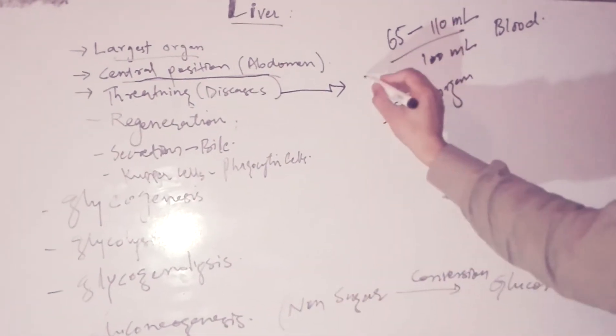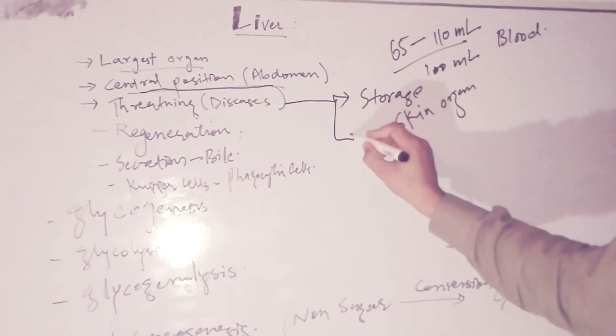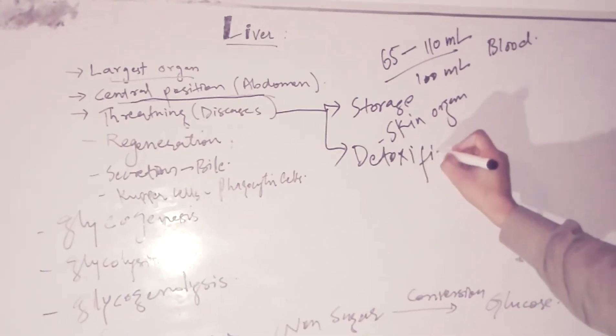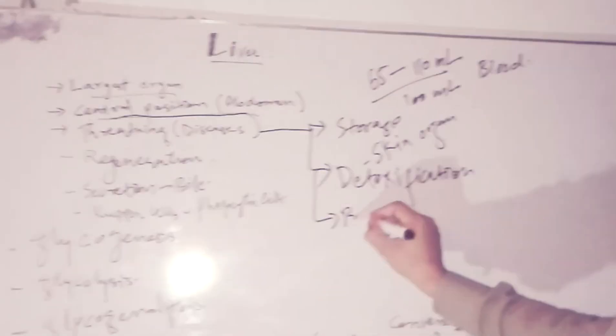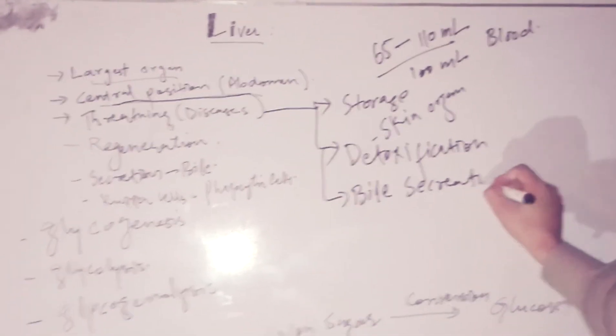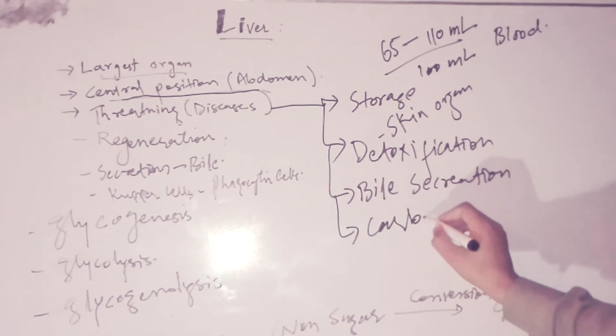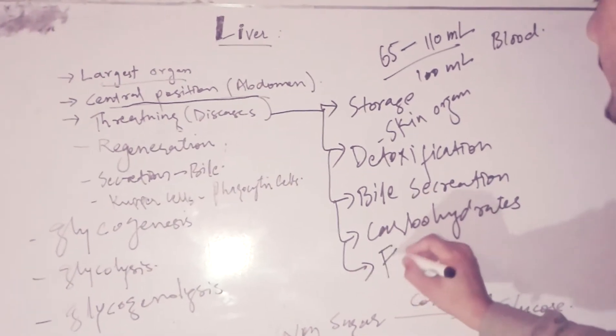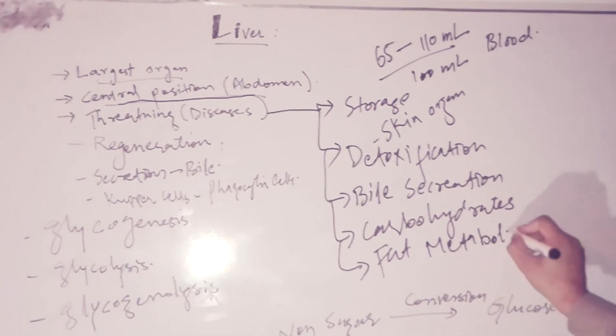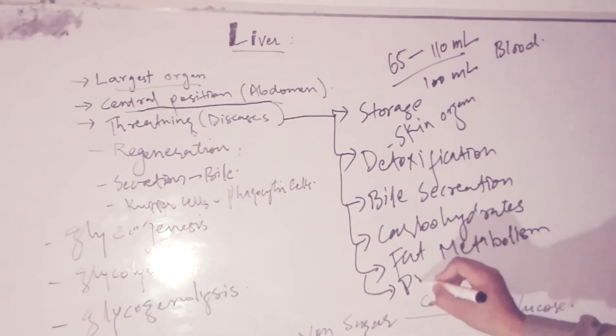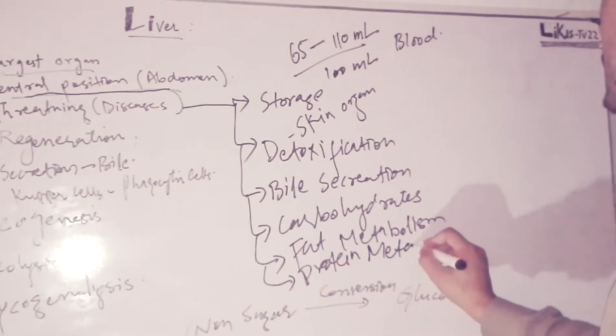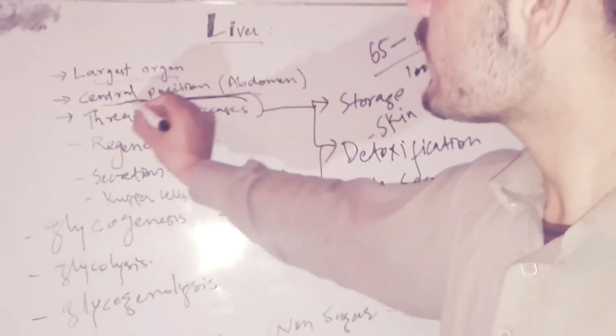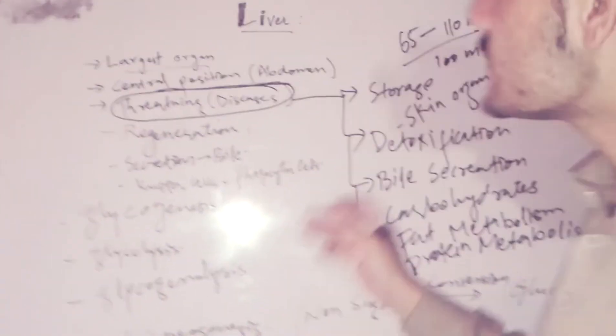Liver is most important because it performs many physiological functions: storage of glucose in the body, detoxification by secretion, carbohydrates metabolism, fats metabolism, and protein metabolism. Liver has great physiological roles in the body, so diseases of the liver will be life-threatening because they will have worse effects on the body.